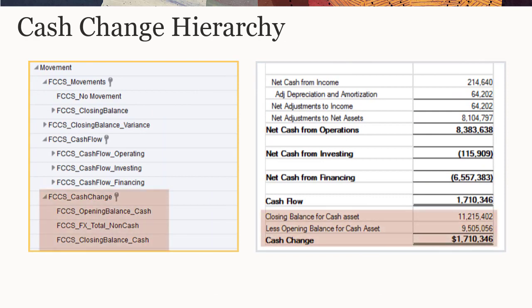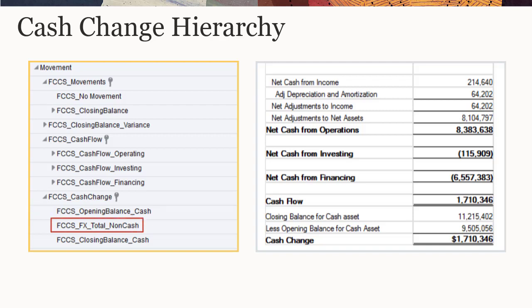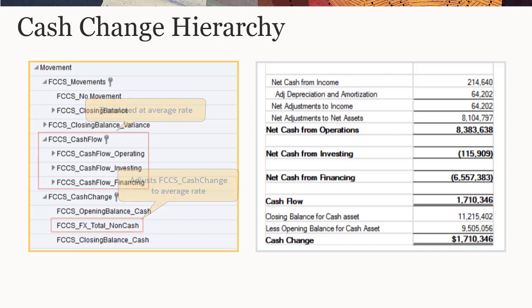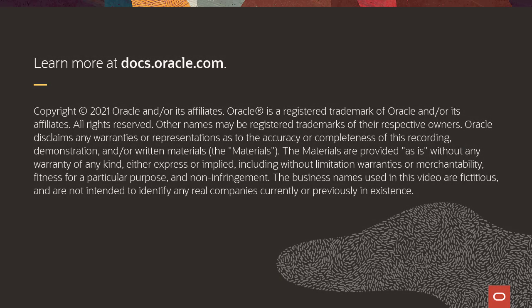The Cash Change hierarchy is used for the lower section of indirect cash flow reports. It shows the total opening balance for your cash accounts, the total closing balance, and the change in cash. For reporting in translated currencies, an adjustment is added. The upper section is translated at average rate, while the net change in cash in the lower section is calculated from opening balance at the prior period ending rate and closing balance at the current period ending rate. It must therefore be adjusted to reflect an average rate translation in order for the two sections to match. The Cash Change hierarchy consists of system-defined members and does not need to be configured.